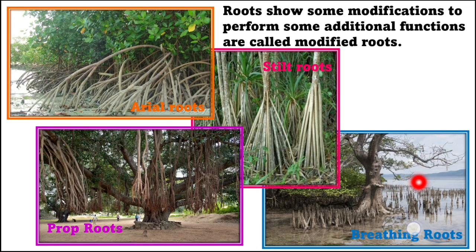Here you can see breathing roots. These roots grow vertically upward to get oxygen for respiration, as these plants grow in saline water. Here you can see roots emerging from the trunk and branches of a banyan tree, growing toward the soil — these roots are called prop roots. So in today's lecture we have discussed about different types of root systems in plants.